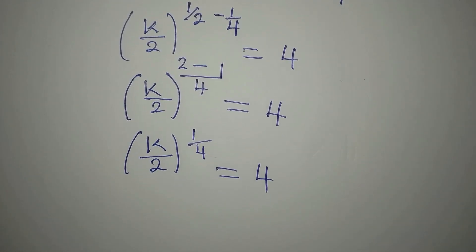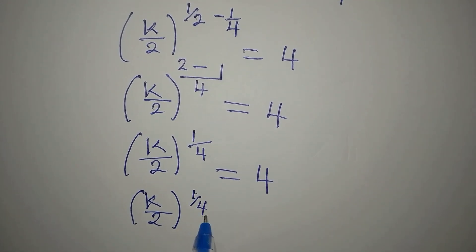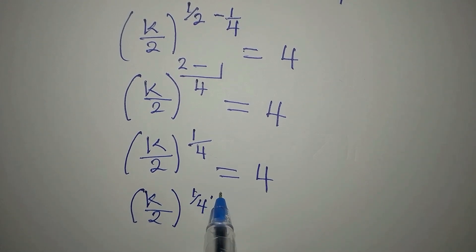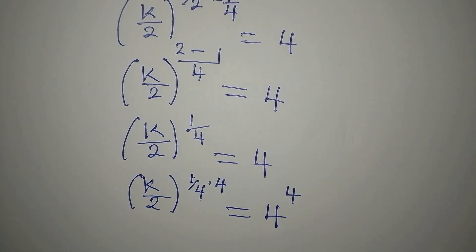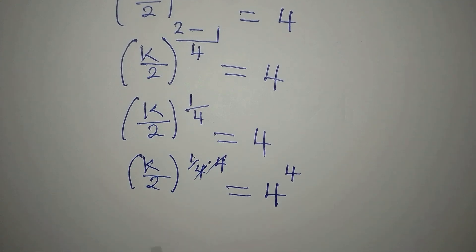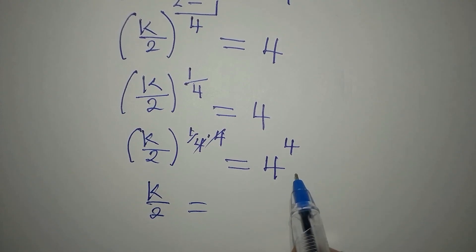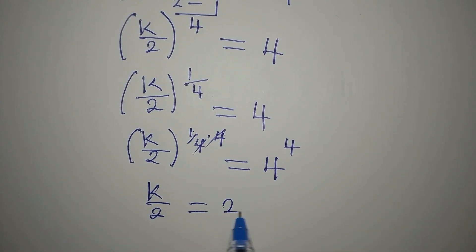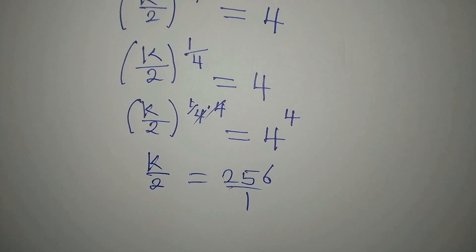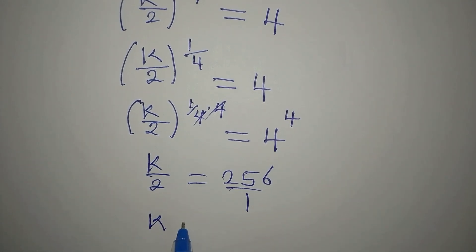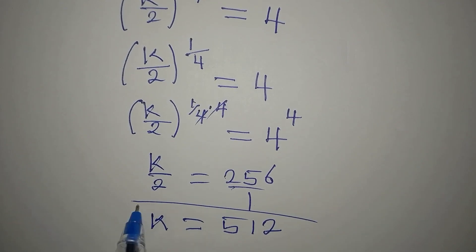Our target now is to remove this power of 1/4. To do that, we multiply the power by 4, and this reflects on the other side as well. So we have k over 2 equals 4 to the power of 4, which gives us 256. Therefore k equals 2 times 256, which is 512. That is the value of k.